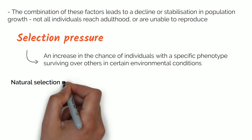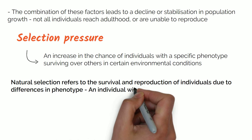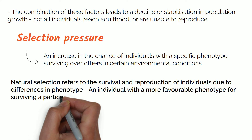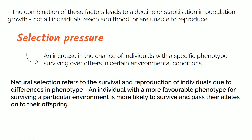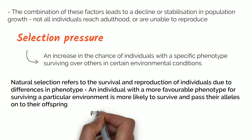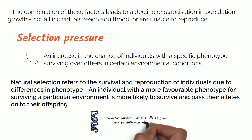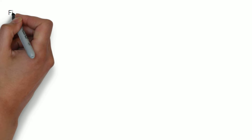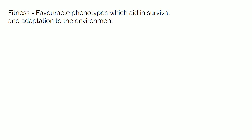Natural selection refers to the survival and reproduction of individuals due to differences in phenotype. Individuals with a more favourable phenotype for surviving a particular environment are more likely to survive and pass their alleles onto their offspring. Variation exists within a species population, and some individuals possess different phenotypes due to genetic variation in their alleles. Environmental factors affect the chance of survival, acting as selection pressure.